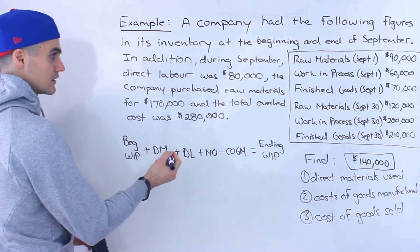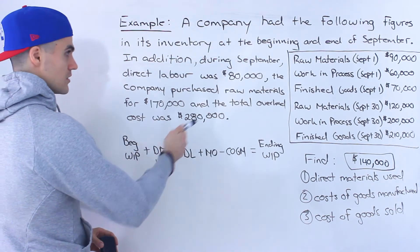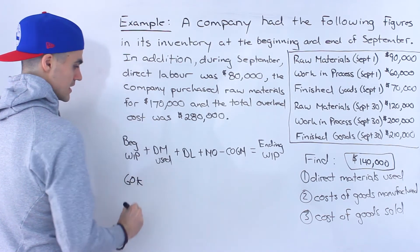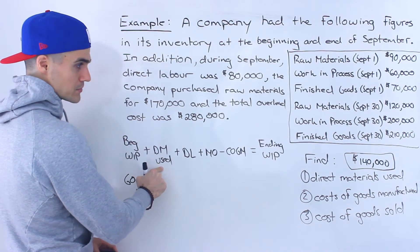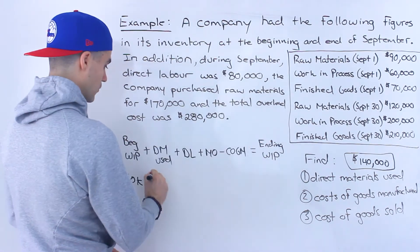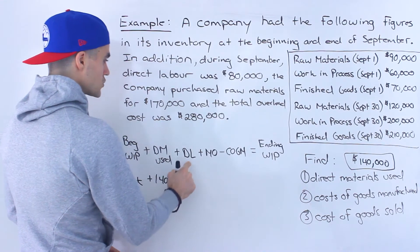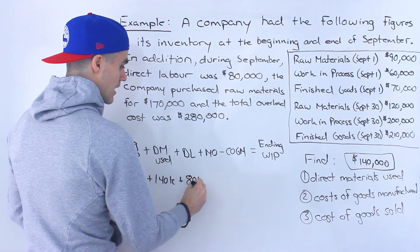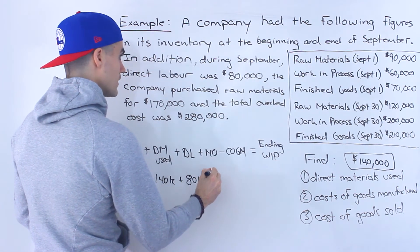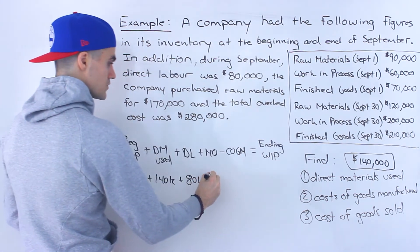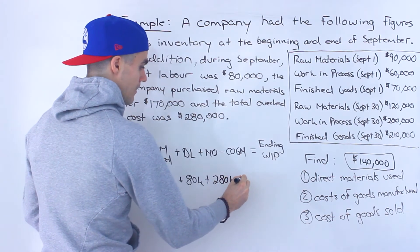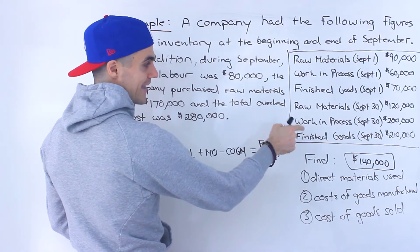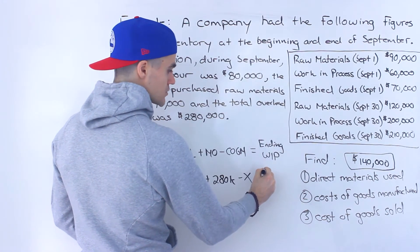Filling everything in: beginning work in process on September 1st was $60,000. Direct materials used — solved in number one — is $140,000. Direct labor during September was $80,000. Manufacturing overhead total was $280,000. The cost of goods manufactured is what we're solving for (X), and we're given ending work in process of $200,000.